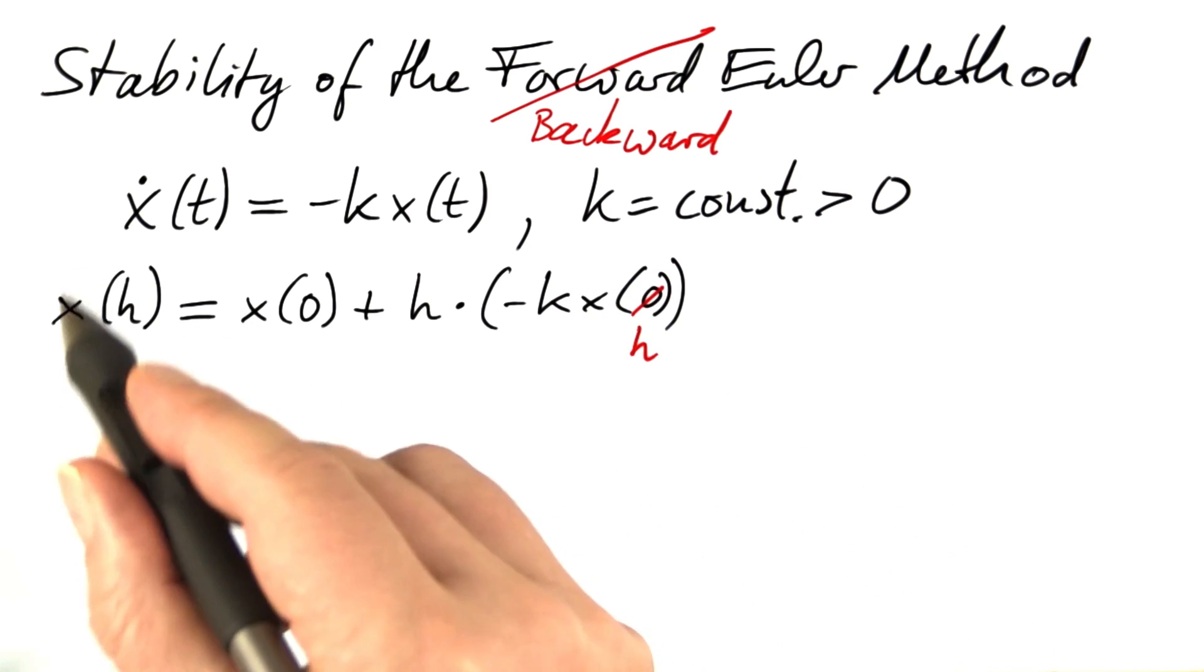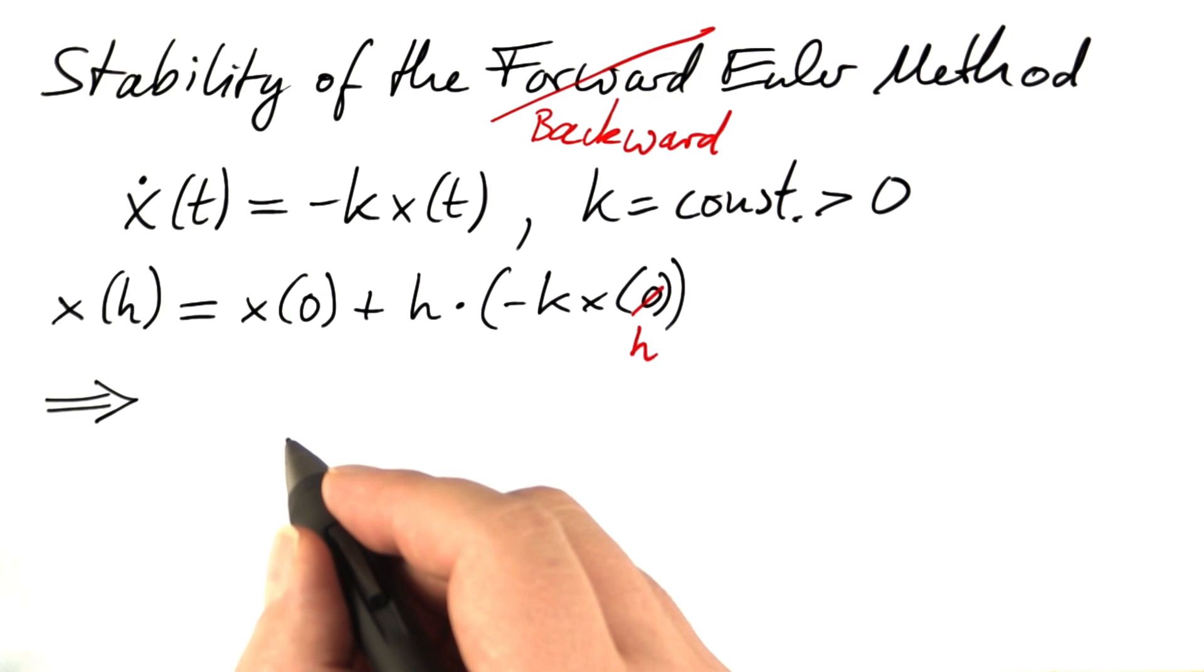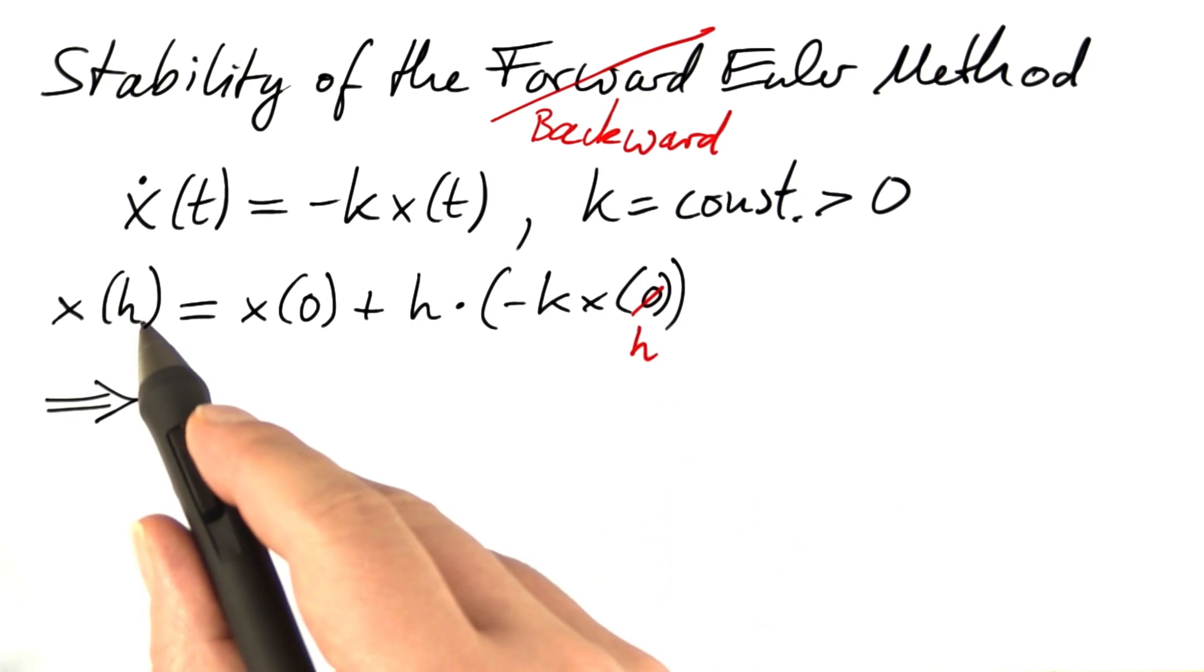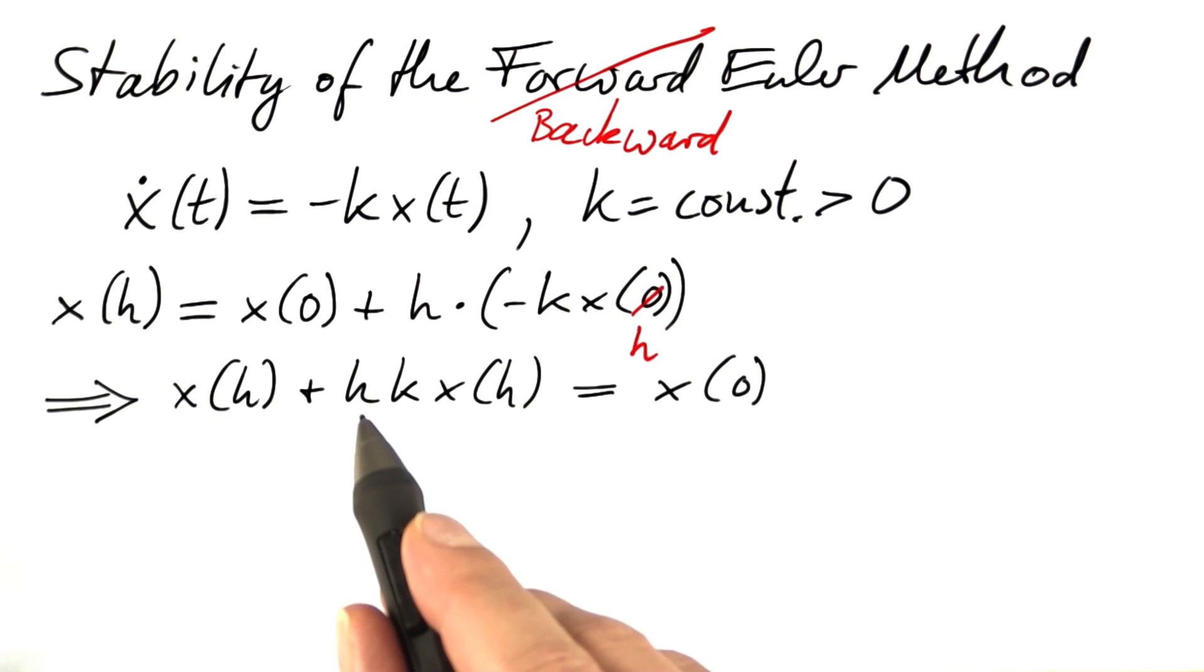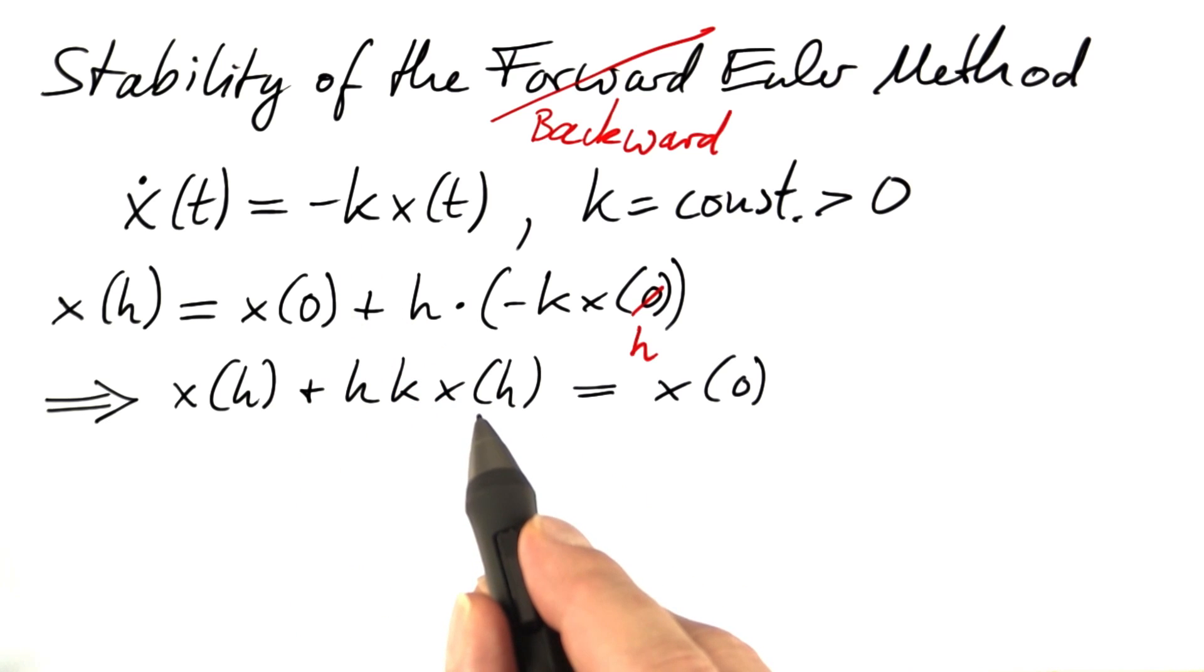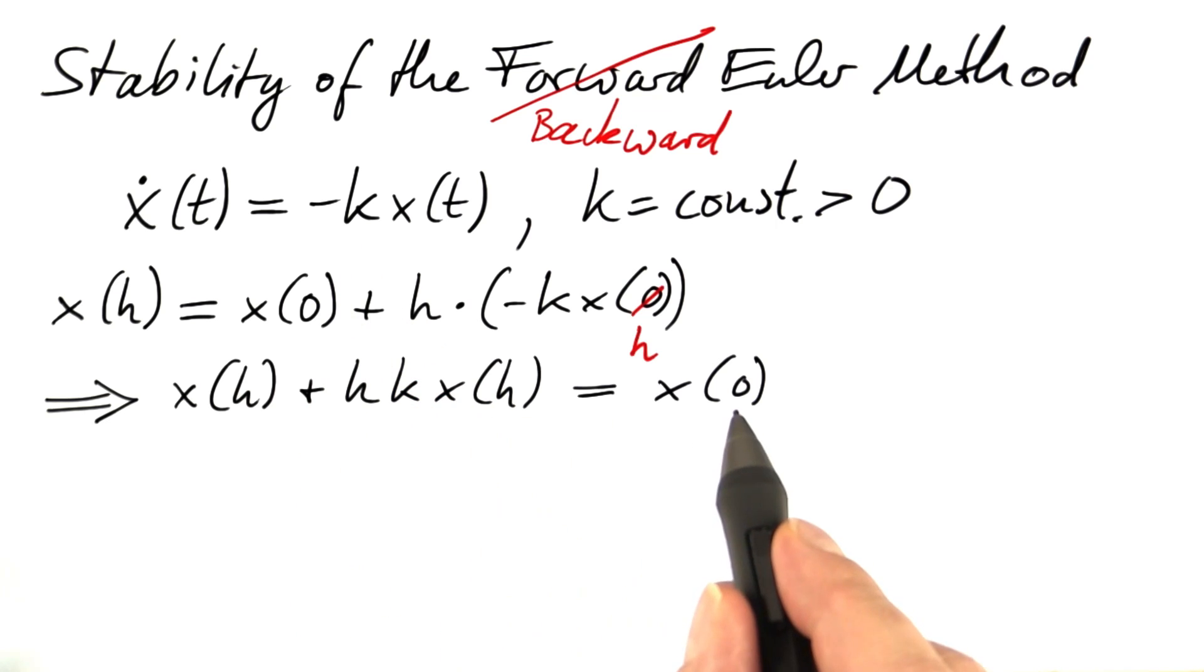We have to solve for x of h. It's hidden in this equation. It's not explicit. So let's solve for x of h. Bring this term over to the left hand side. Then we have x at the end of the first step plus time step times constant times x at the end of the first step equals the initial value.